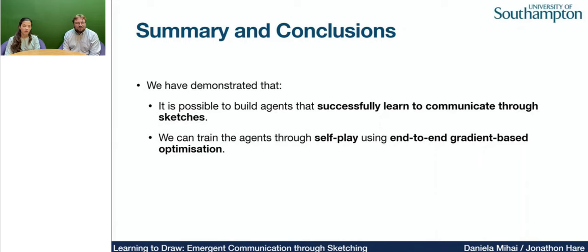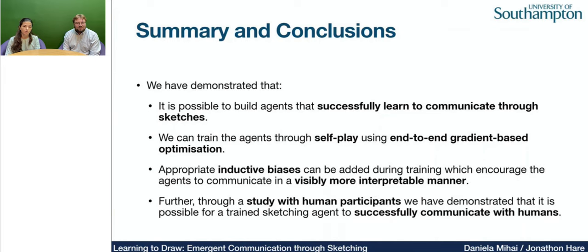To summarize, we hope our work is a step towards exploring visual communication between artificial collaborative agents. We've shown that it is possible to train such agents in a self-supervised end-to-end framework. With the human evaluation experiments, we've seen that with appropriate inductive biases, it is possible to induce visibly more interpretable sketches that agents can use to successfully communicate with humans.